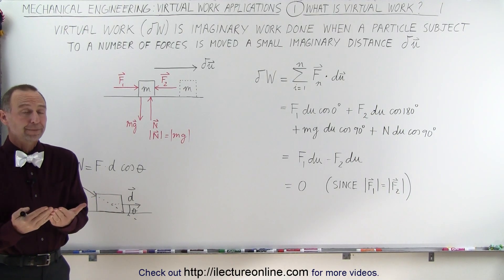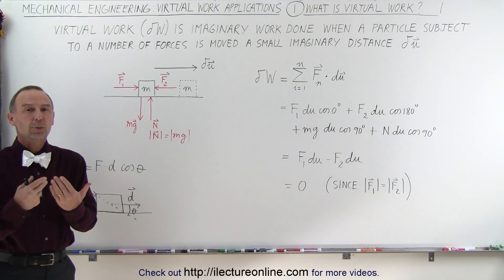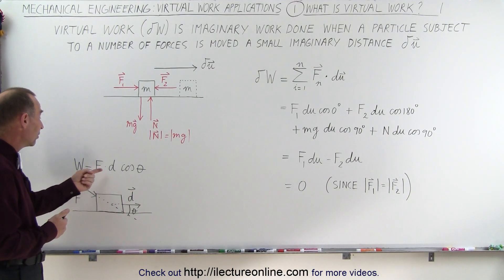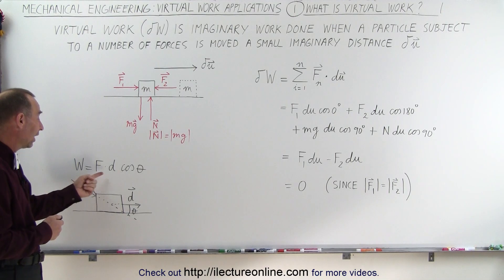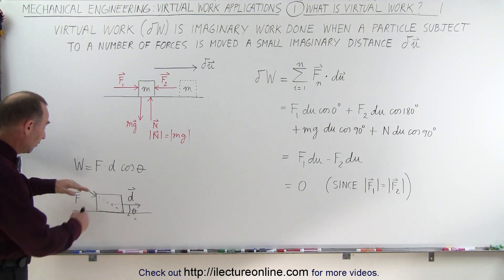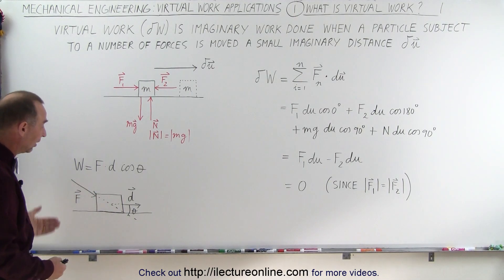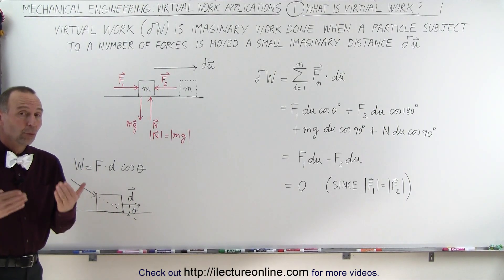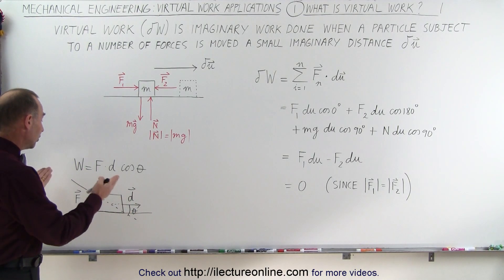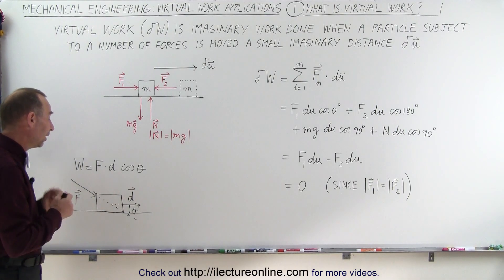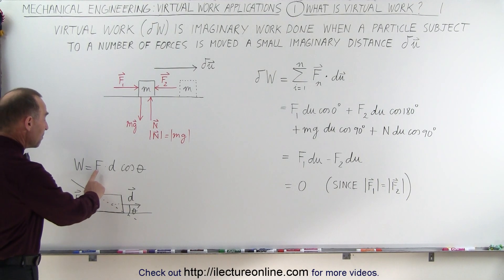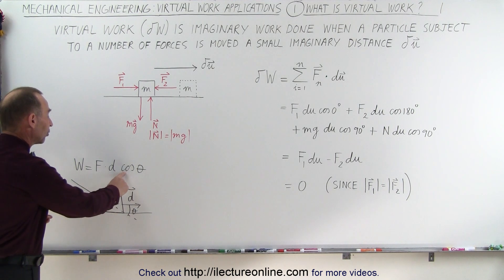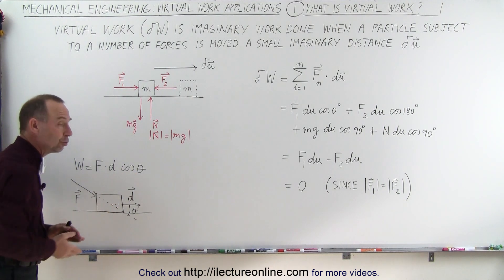What's virtual work? Well most of us are familiar with real work. Real work can be defined as the dot product between the force and the displacement. In other words, if an object is subjected to a force and the object is then pushed through a certain displacement, the work done is simply equal to the dot product of the force times the displacement, which is equal to the magnitude of the force times the magnitude of the displacement times the cosine of the angle between the two vectors.